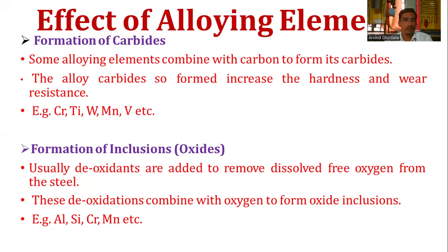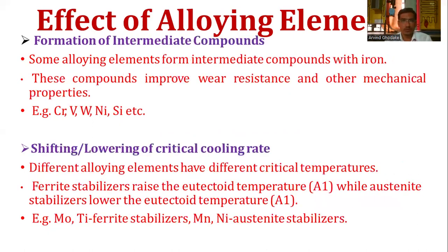The next effect is the formation of inclusions, specifically oxides. Deoxidants are added to remove dissolved oxygen from the steel. These deoxidants combine with oxygen to form oxide inclusions. For example, aluminum, silicon, chromium, and manganese are elements that promote the formation of such inclusions or oxides.